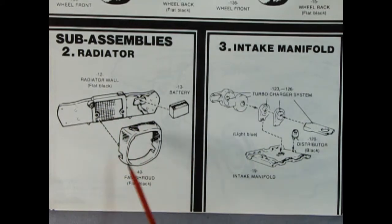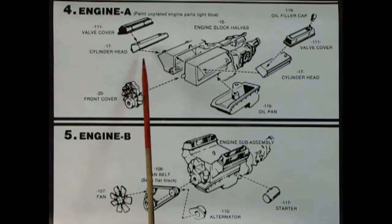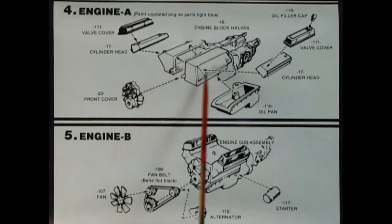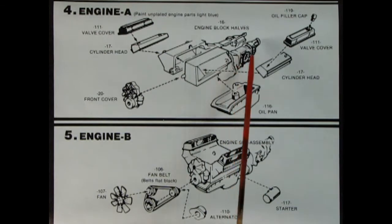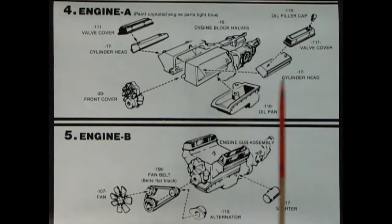Panel two shows the sub assembly here. We have our radiator wall, the fan shroud, then the battery. And then step three is the intake manifold, so here we've got all our turbocharger pieces, there's five right there, our distributor and the intake manifold. Panel four shows engine assembly A, and there we've got our valve covers and our cylinder head, our left and right hand side engine block with the transmission molded on the back. You got a little chrome filler cap there as well, a chrome oil pan and our front cover.